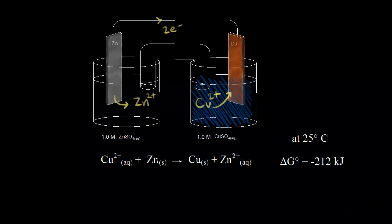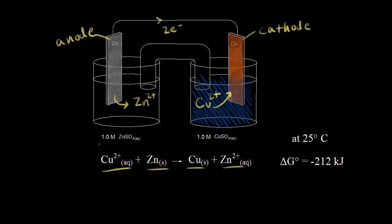We already know that for this galvanic cell, solid zinc is oxidized to zinc two-plus ions. Oxidation occurs at the anode, so this electrode is our anode. And copper two-plus ions are reduced to solid copper. Reduction occurs at the cathode, so this electrode is our cathode. Starting with a one-molar concentration of zinc sulfate, the initial concentration of zinc two-plus is one molar. And with one-molar copper sulfate, we're starting with a concentration of copper two-plus of one molar.